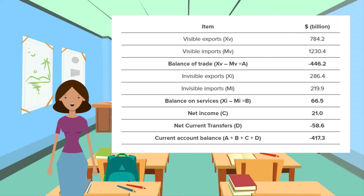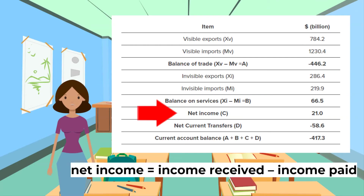Income credits or inflows include wages paid to UK residents working overseas, and any interest, profits, and dividends earned by UK residents and firms on investments they have in other countries. This gives us the equation: net income equals income received minus income paid.